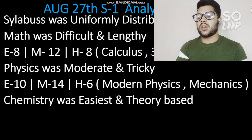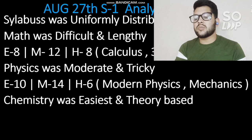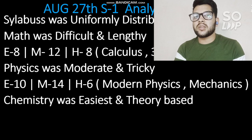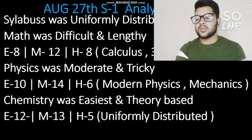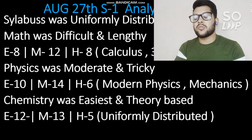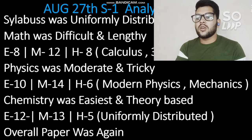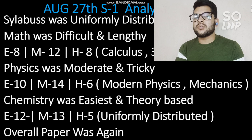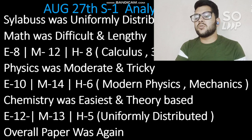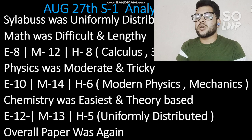Chemistry was the easiest among all three subjects, as expected. It was theory-based and NCERT-focused, so for chemistry you just need to focus on NCERT main points to score more marks. Easy questions were 12, moderate 13, hard 5, and it was uniformly distributed across almost all topics. Overall the paper was moderate. Math was the toughest section, making the paper slightly difficult overall, but it is still considered moderate.